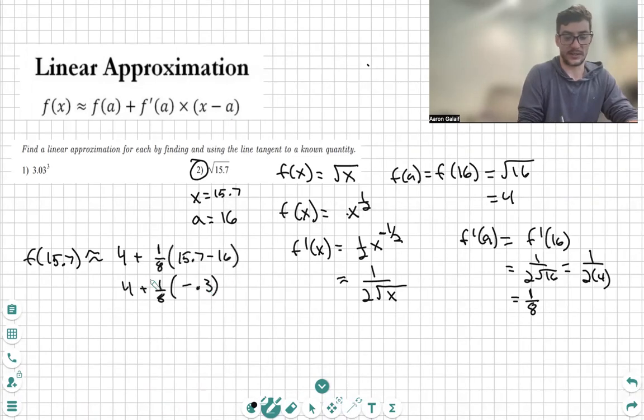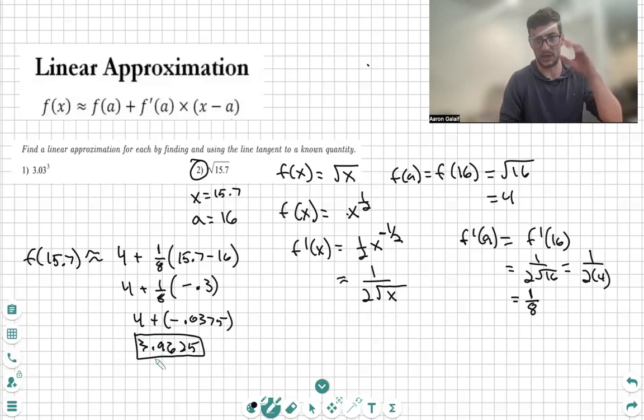And we just need to multiply that times 1/8: 4 plus negative 0.0375. Obviously, this will subtract from the 4 and we get a value of 3.9625. That is our approximated value, our linear approximation for square root of 15.7.